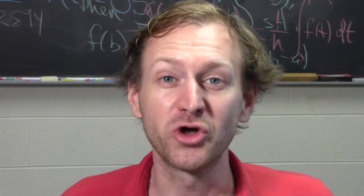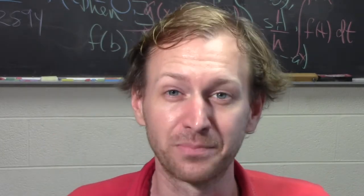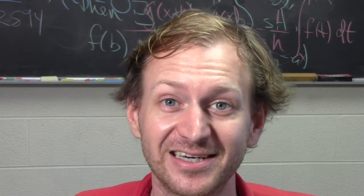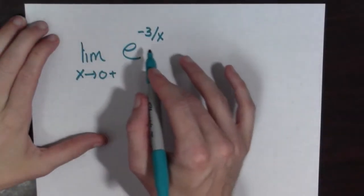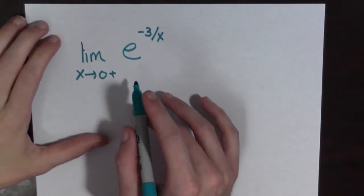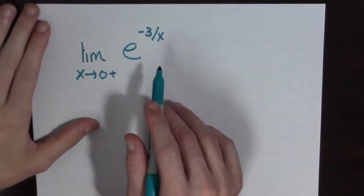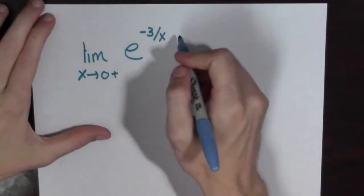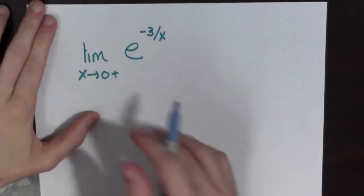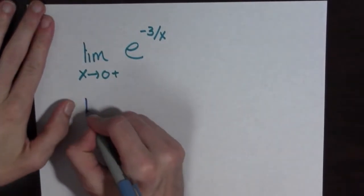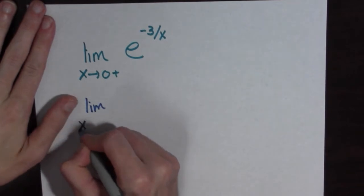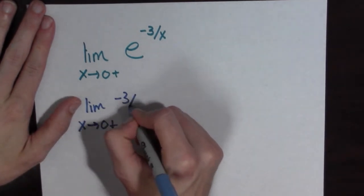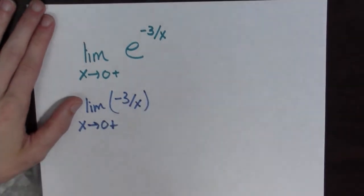Hi there. I'm going to show you four more examples of limits, some of them involving infinity. Here's our first example. What I want to do is look at the exponent outside of this function — specifically the limit as x goes to zero from the right of minus three over x.